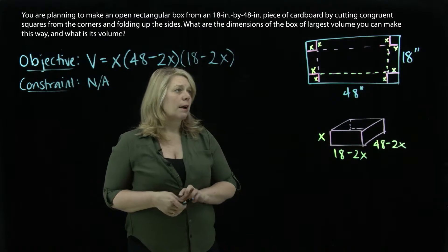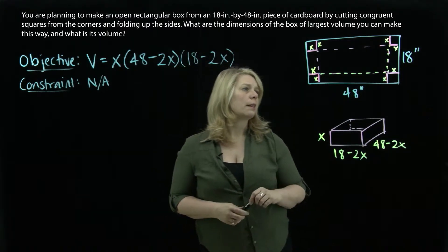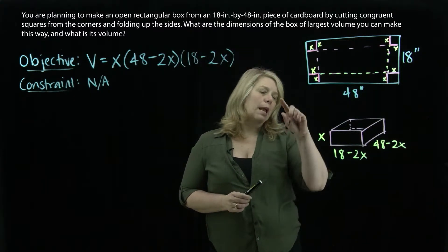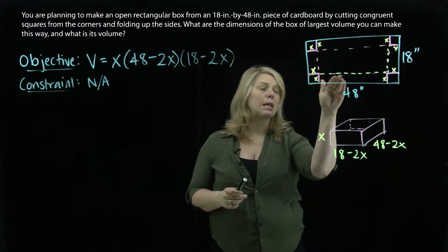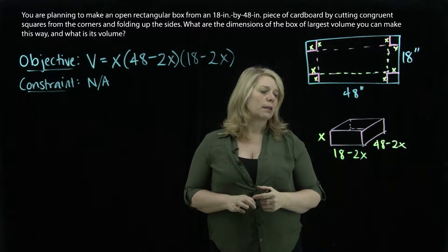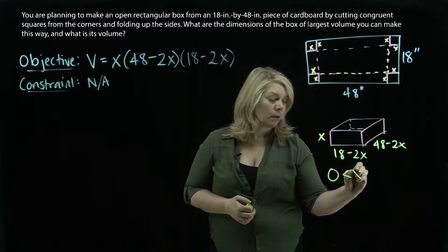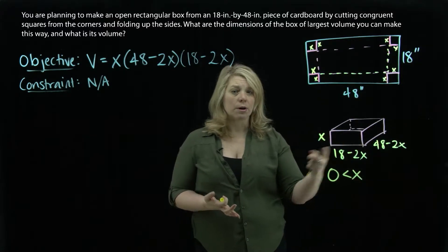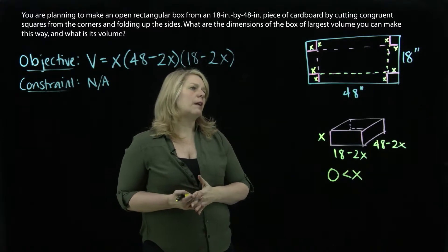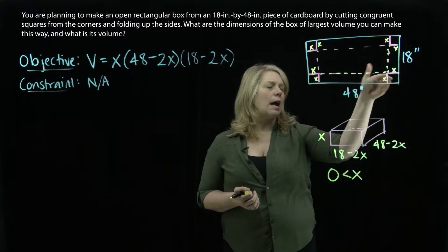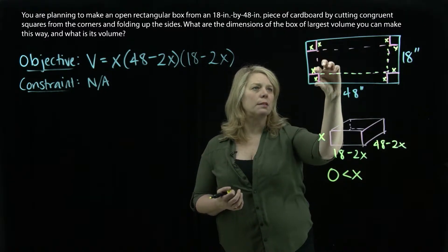Another important part of all of these problems is thinking about the feasible domain. I'm going to look at the picture and think about that. The feasible domain, my input variable here is x. So it's really thinking about how big x could be that we could have this box. Certainly x is going to have to be greater than 0, or I wouldn't be snipping out any corners and I couldn't create a box. But there's also a biggest possible value that x could be. If I look at the shorter side of my rectangular piece of cardboard, I have two of those pieces of size x.